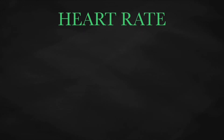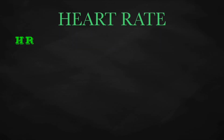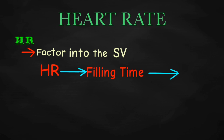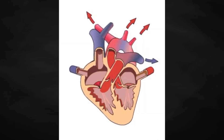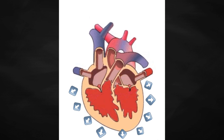Let's talk about heart rate as a determinant of cardiac output. Though the equation cardiac output equals stroke volume times heart rate seems logical, the use of heart rate as a straight multiplier is a bit simplistic, as it actually also factors into the stroke volume. Consider that the heart rate determines the diastolic filling time, which in turn determines the stroke volume by the Frank-Starling mechanism. According to the Frank-Starling mechanism, when the blood volume in the ventricles increases, cardiac muscle fibers stretch and then contract.